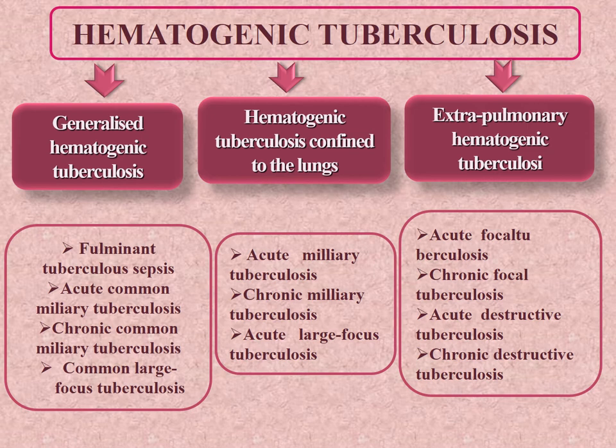Generalized hematogenic tuberculosis is usually a generalized condition with dissemination throughout the body. This is the most serious form in debilitated persons. Pulmonary tuberculosis sepsis (Landau's disease) develops, which is a fatal condition. Sometimes spreading of the process to different organs with granuloma production occurs — so-called acute common miliary tuberculosis. Chronicity may also occur if lesions are larger — common large-focus tuberculosis develops.